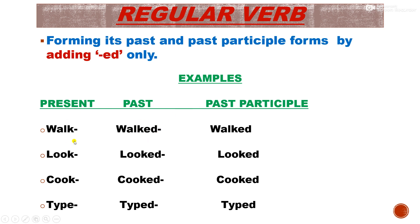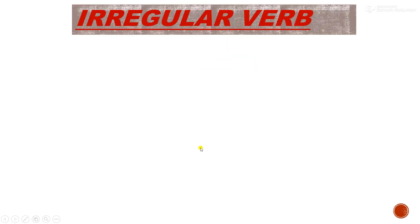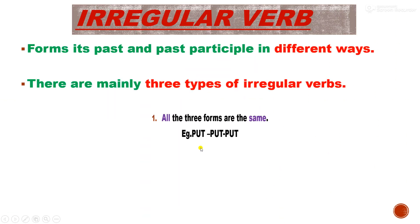The past participle form is where -ed is added to the present form. So in a regular verb, all changes follow the same pattern — just add -ed. For example: look, looked, looked; cook, cooked, cooked; type, typed, typed. So your changes in regular verbs follow this consistent -ed pattern.